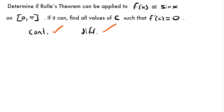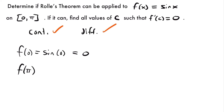Now we check the endpoints. f(0) = sin(0) = 0, and f(π) = sin(π) = 0. Both endpoints have the same y-value of 0, so Rolle's theorem applies and we can solve for the values of c where the derivative equals 0.